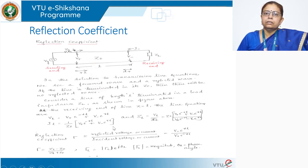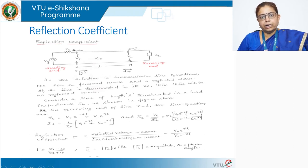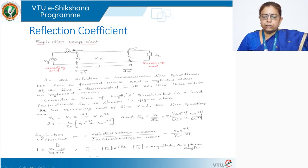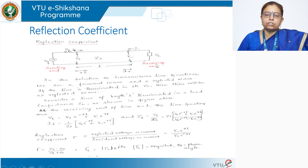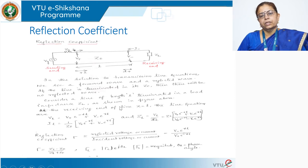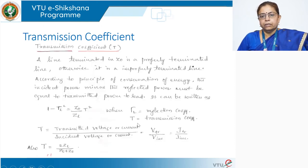For a lossless transmission line, Z0 = √(L/C), which is a real number. ZL in general is always complex unless it is a pure resistance. Now let us move on to the transmission coefficient. We have a general transmission line with characteristic impedance Z0 terminated in ZL.